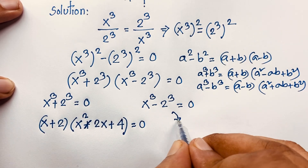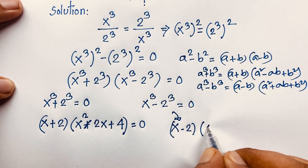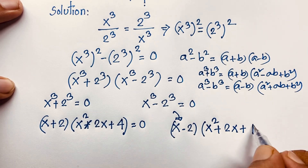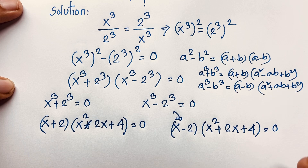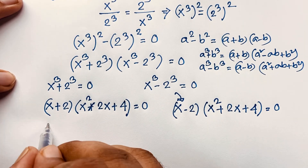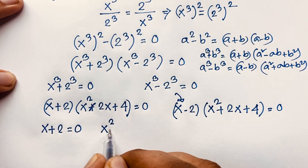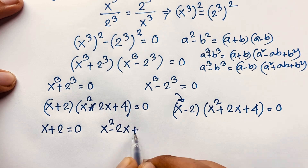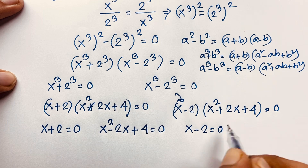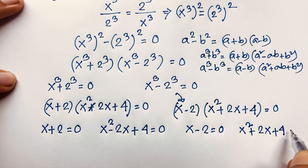And for the other case, x³ − 2³ = 0 gives us (x − 2)(x² + 2x + 4) = 0. So from these two factored equations, the linear factors give us x + 2 = 0 and x − 2 = 0, and the quadratics are x² − 2x + 4 = 0 and x² + 2x + 4 = 0.